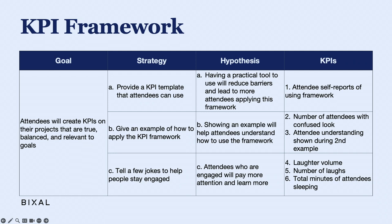Up top we have attendee self-reports of using the framework — I really do hope some of you will email me and let me know if you're using it. For strategy B, two KPIs: I'm looking around to see how many people have a confused look on their face — I used to teach second grade so I relied on this a lot. Right now it looks like we're at a pretty low level, so that's good. We'll also do an example together after this. Finally, KPIs four, five, and six: laughter volume, number of laughs, and total time of attendees sleeping during my talk, to determine how successful I was in keeping people engaged.